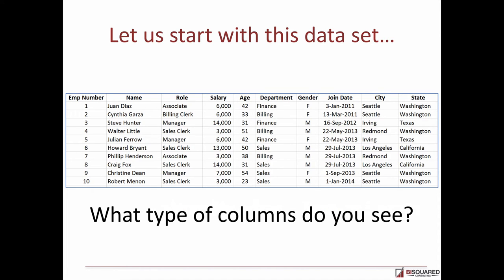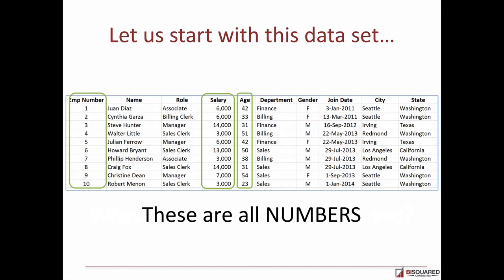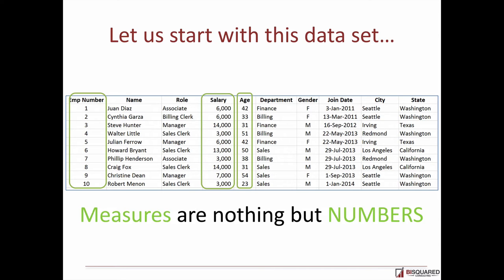What type of columns do you see? These are all the numbers I see: employee number, salary, age. These are all the numbers. And measures are nothing but numbers. That's all.